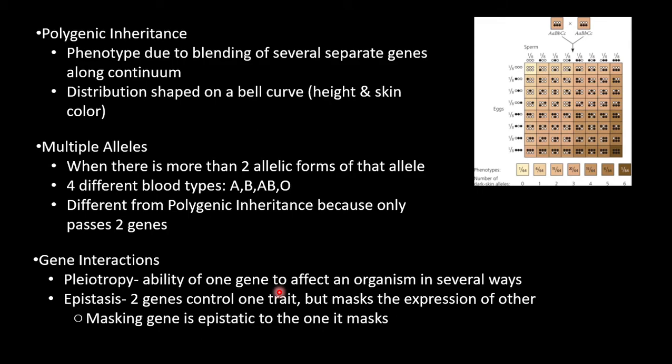Multiple alleles is when there's more than two allelic forms of that gene, like blood type A, B, AB, and O. It's different from polygenic inheritance because it only passes two genes.